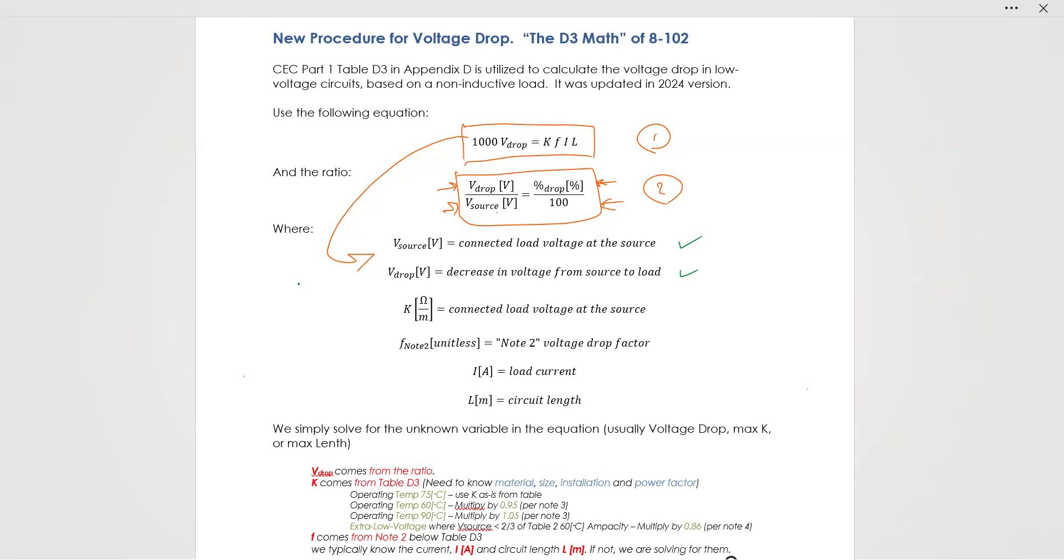It's not the new voltage, it's the amount that it actually dropped. So the new voltage plus voltage drop would equal voltage source. Then there's this K value. K value is just the thing from the table - that's D3, the K value. And then there's a bunch of notes on the K value table.